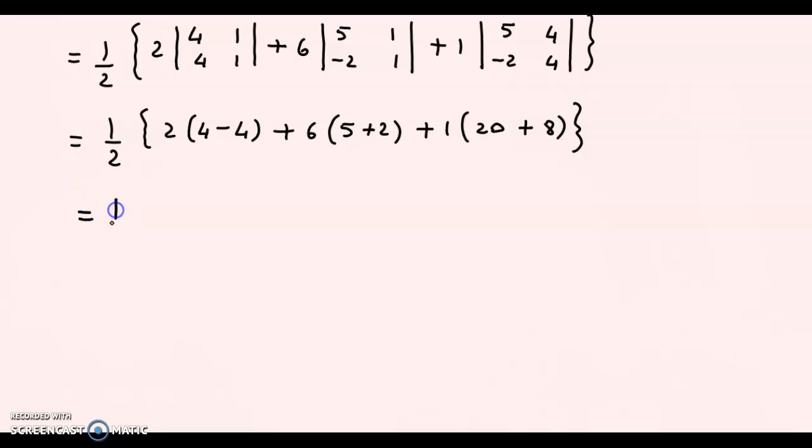We have one-half times (0 + 42 + 28). If we add, we get 70. If we reduce this, we get the answer as 35. Since it is area, we mention square units. So the required area is 35 square units.